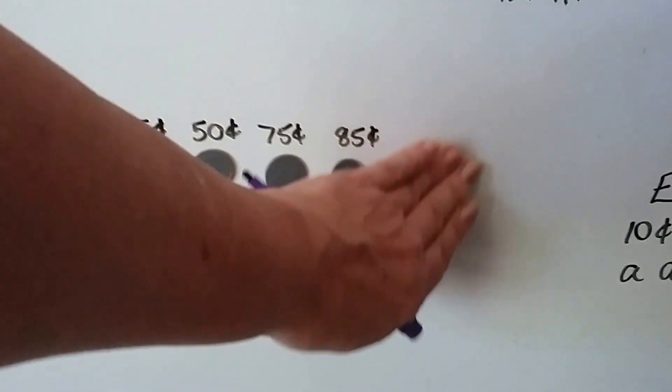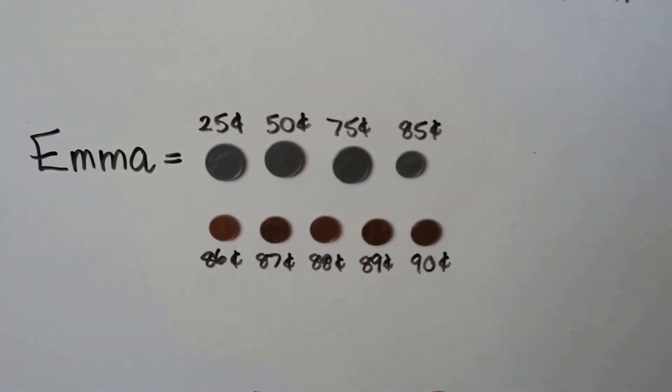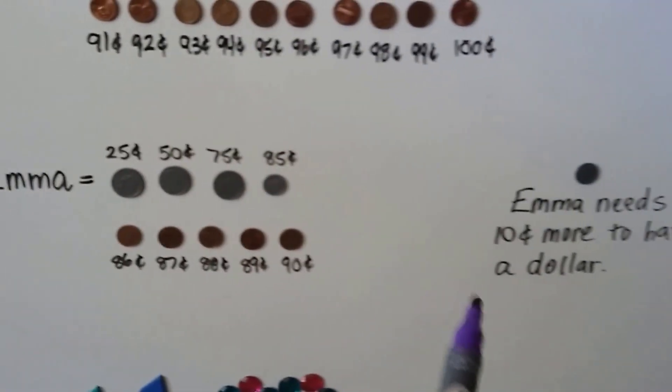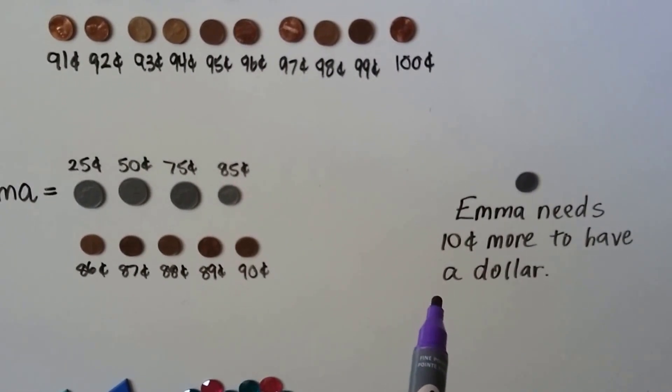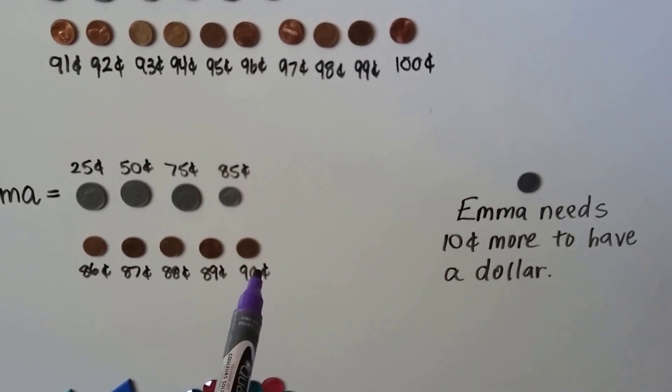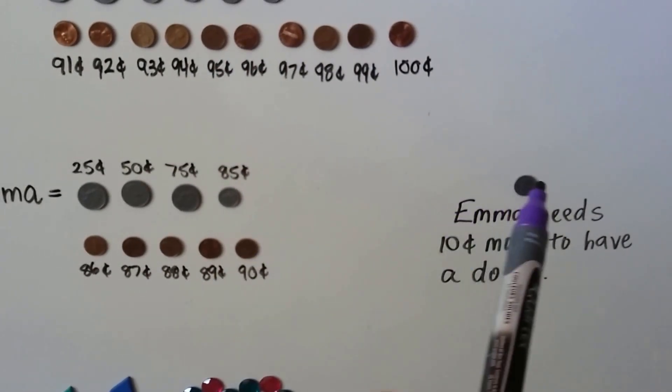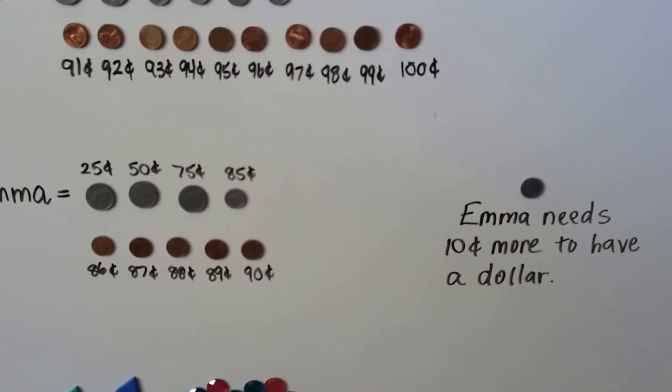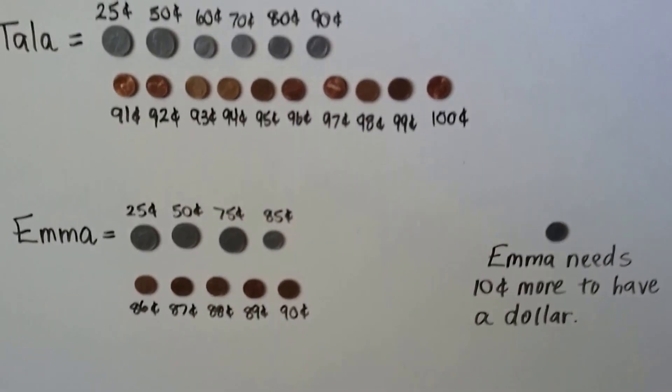So how much does Emma need if she needs a dollar? How many more coins? Well, Emma needs 10 cents more to have a dollar. If she's at 90 and we give her a dime, or two nickels, or 10 pennies, then she'll have a dollar too.